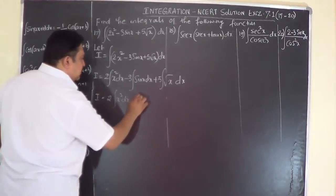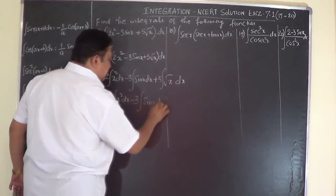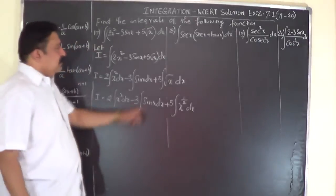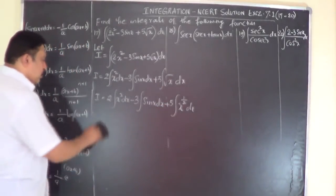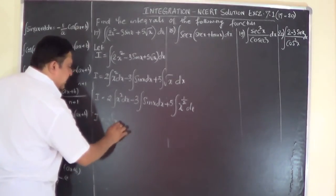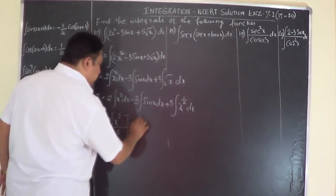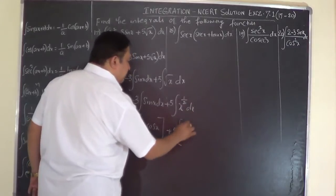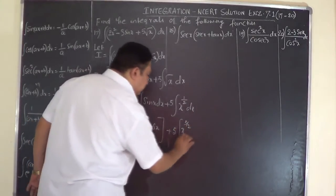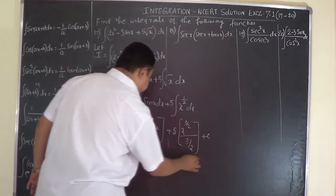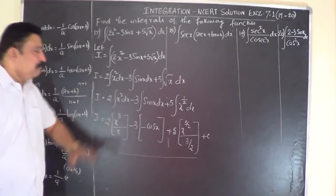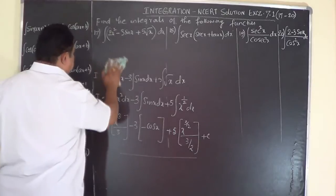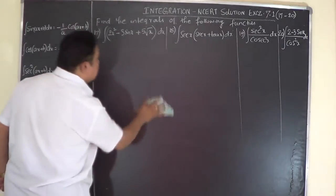Rewrite the last term as 5 times integral of x to the power of half dx, because root x is x to the power of half, so we can use the power rule. So I equals 2 times x to the power of 2+1 divided by 2+1, minus 3 times integral of sine x which is minus cos x, plus 5 times x to the power of 3/2 divided by 3/2. The minus 3 times minus becomes plus. That's problem 17.